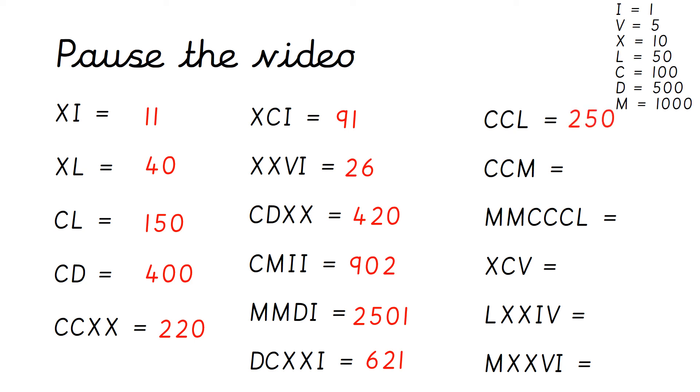CCL, which would be 250. CCM, which is 800. This next one looks really, really tricky, but it's not that difficult. So you've got M, add M, which is 2000. C, add C, add C, which is 300. And then 50, so it would be 2350.